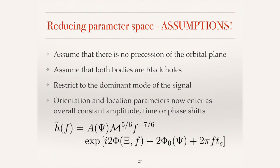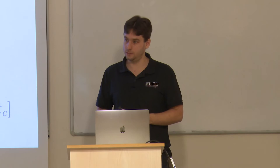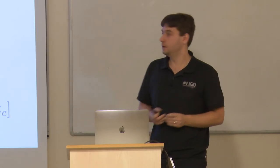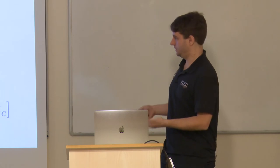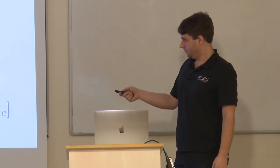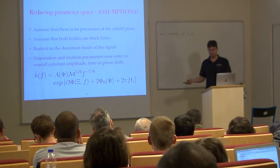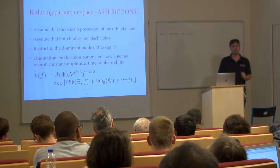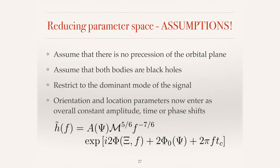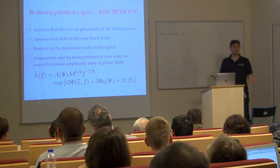The second assumption is that both bodies are treated as black holes — even when searching for neutron stars, we don't include neutron star physics in the templates; we just assume very low-mass black holes. We also assume both bodies are on circular orbits — no eccentricity. Fortunately, gravitational radiation causes systems to lose eccentricity as they evolve, so residual eccentricity by the time we observe a system is quite low. We also only consider the dominant quadrupole mode in the gravitational wave emission.